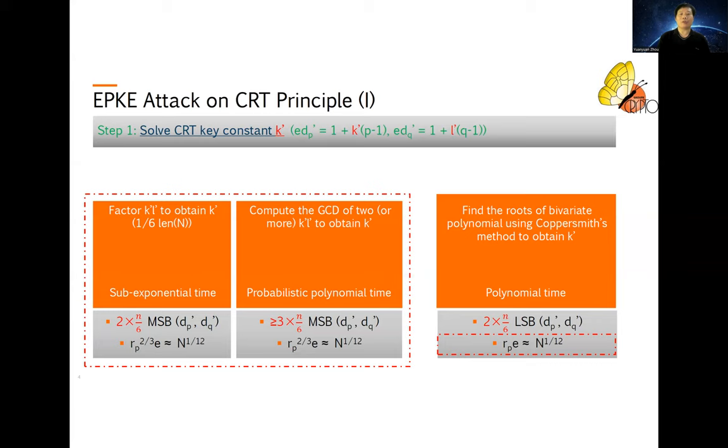And the second scenario is we have multiple DQ' available, and then we compute the GCD to get the K'. In the LSB case, we just simply use Coppersmith's method to find the roots of bivariate polynomial to get K'.